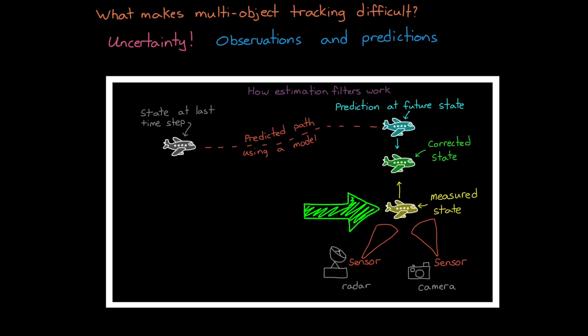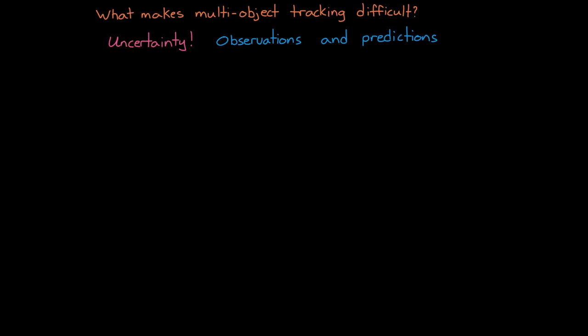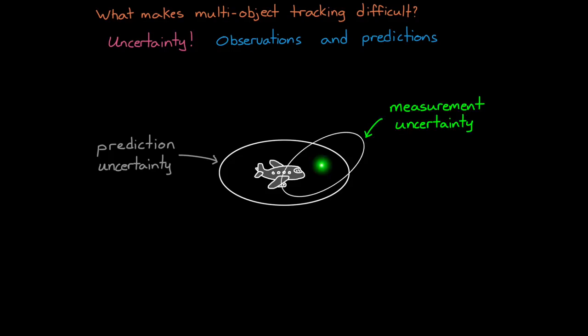Remember from the last video that an estimation filter, like a Kalman filter, works by blending an uncertain measurement with an uncertain prediction. And we looked at tracking an airplane with a radar station. We predicted where the airplane would be in the future, and then we corrected it with a noisy radar measurement.